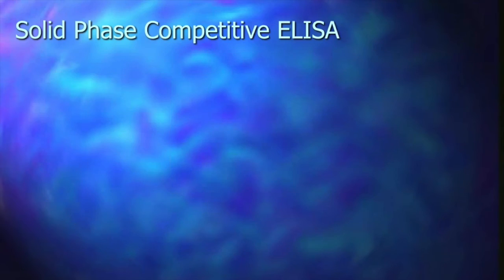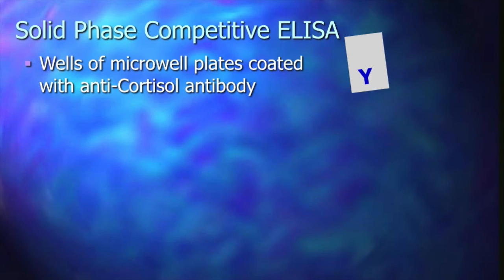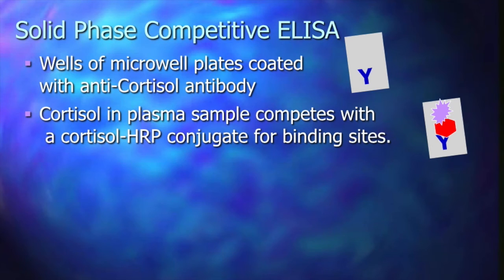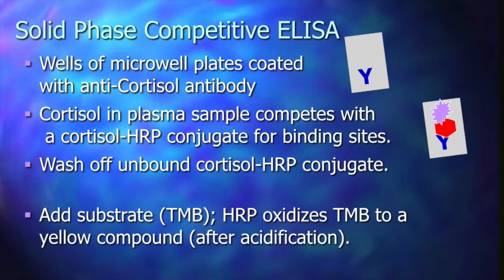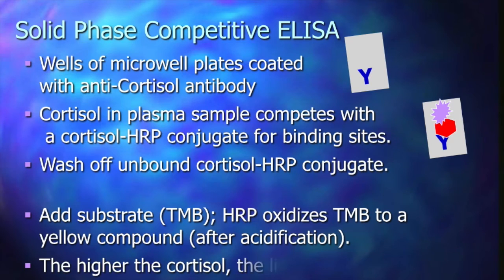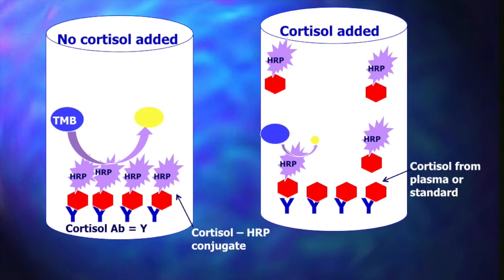Let's compare that process to the solid-phase competitive ELISA using cortisol as the example hormone. Start by coating the wells of the micro-well plate with the anti-cortisol antibody. The cortisol in the sample will compete for the binding sites with a cortisol-HRP conjugate. Wash, and then add the TMB for it to oxidize with the HRP to produce the yellow product.